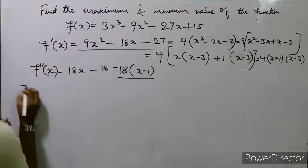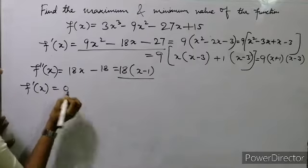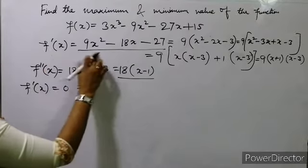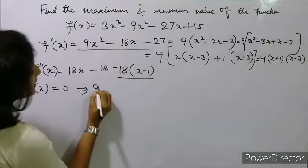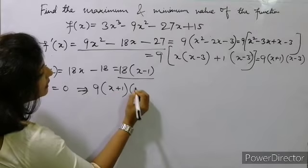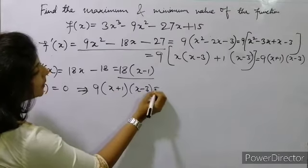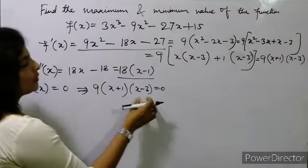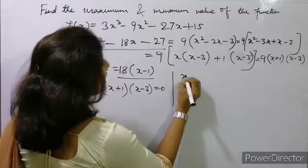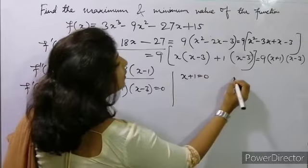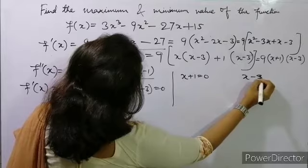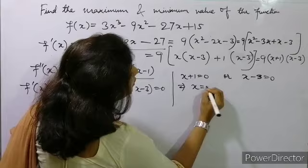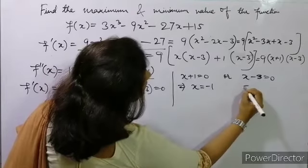For extreme values, f'(x) should be equal to 0. So we write f'(x) = 9(x + 1)(x - 3) = 0. Since 9 cannot equal 0, either x + 1 = 0 or x - 3 = 0. So there are two cases.